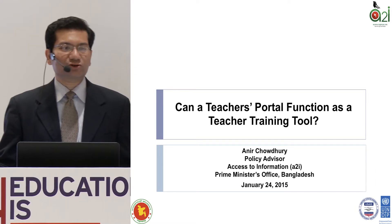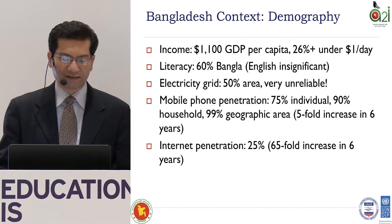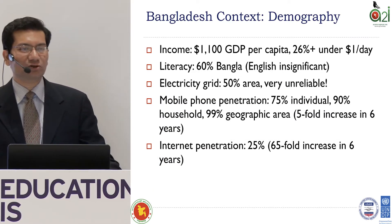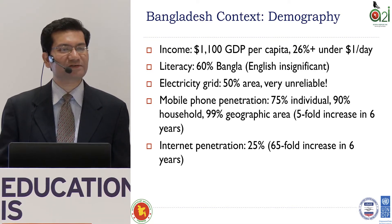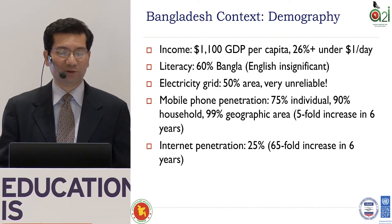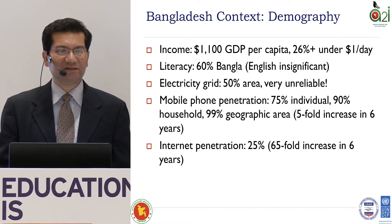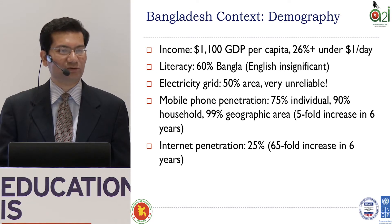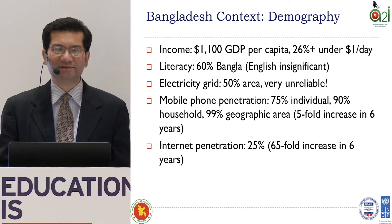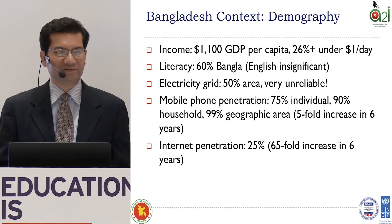Bangladesh is a very poor country, about $1,100 GDP per capita. 26% of the population lives under a dollar a day, below the poverty line. Literacy is about 60 to 65%. English literacy is very low, and that's important for technology because English is still the language of technology, and that language understanding is very low, less than 5%.